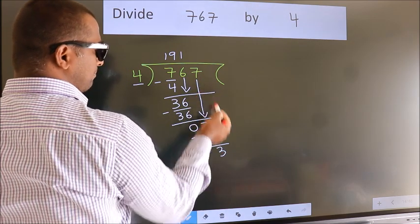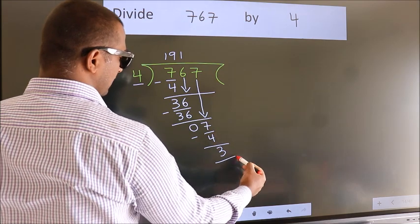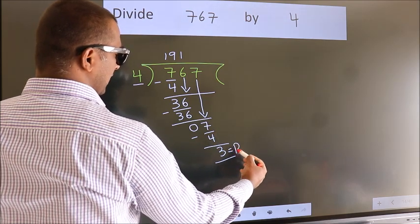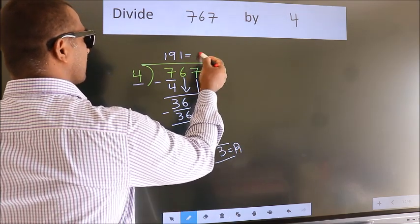No more numbers to bring down, so we stop here. This is our remainder. This is our quotient.